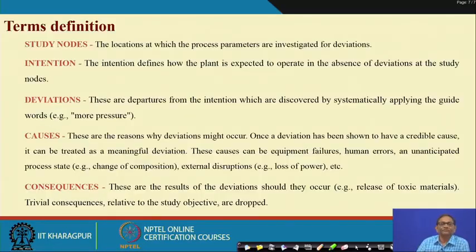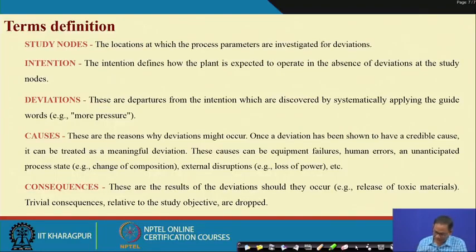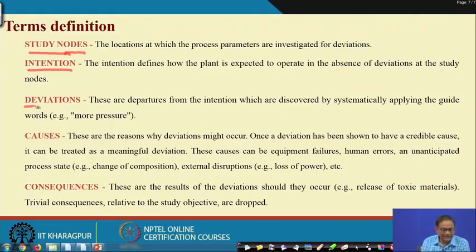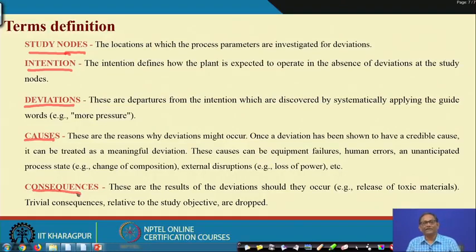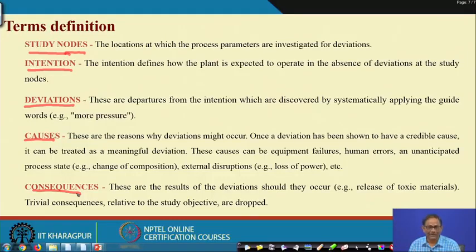In order to understand HAZOP you require to define some terms. Under these, a few important things: one is study nodes, second is intention, then deviation, causes, and consequences. If you recall PHL or PHA, we discussed that the total system will be broken down into sub-systems and finally to the component level, and then at the component level or subsystem level you try to find out the hazards.